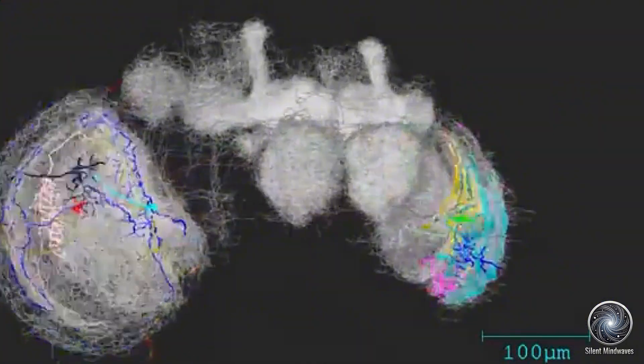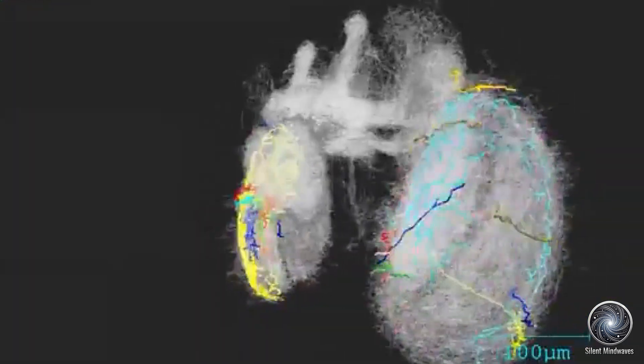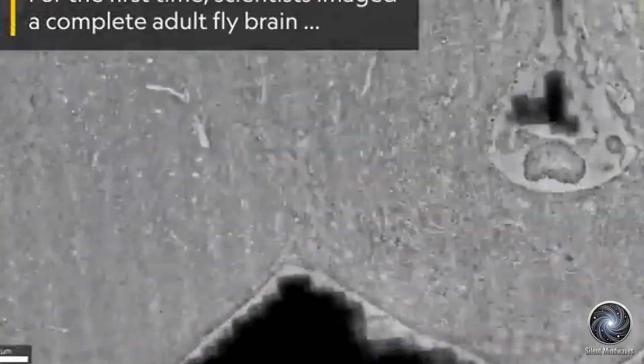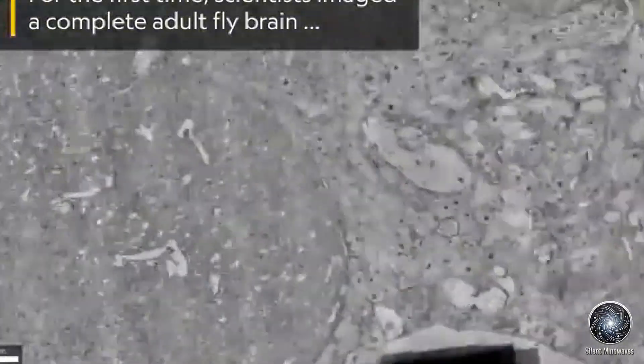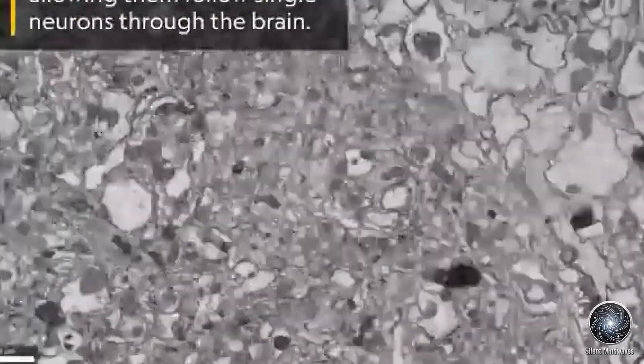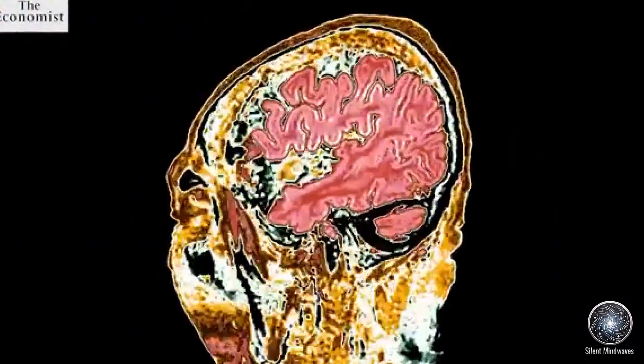Mapping a mouse brain will be a significant challenge, as it contains about 1,000 times more neurons than a fruit fly's brain, with more diverse neural connections. This complexity is a stepping stone toward mapping even larger brains, including that of humans.